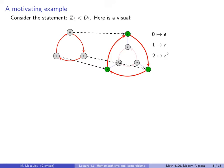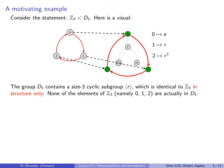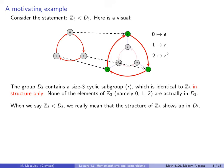Let's start with a motivating example. Consider the statement: Z3 is a subgroup of D3. Here is the group Z3, which consists of 0, 1, and 2. And here is the group D3, which consists of E, R, R squared, F, RF, and R squared F. The group D3 contains a size-3 cyclic subgroup, namely the one generated by R, which is identical to Z3 in structure only. None of the elements of Z3 — namely 0, 1, and 2 — are actually in the group D3.